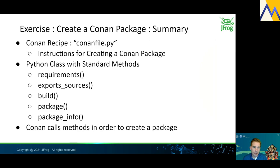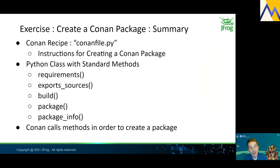Key takeaways from this exercise: The Conan recipe is conanfile.py — it's the instructions for creating a Conan package, just a Python class with standard methods. requirements defines dependencies. export_sources defines the sources. build tells Conan how to build the artifacts. package captures those artifacts. package_info declares what was captured and the folder structure of those artifacts. Conan calls these methods in order to create the package.